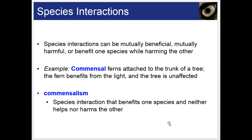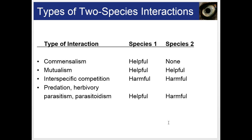There are many types of species interactions. They can be mutually beneficial, mutually harmful, or benefit one while harming the other. One example is commensalism — a species interaction that benefits one species and neither harms nor helps the other, so the other species is neutral. For example, commensal ferns attach to the trunk of a tree: the fern benefits from the light, and the tree is unaffected. A chart helps keep track of these interactions: commensalism is helpful for species one and neutral for species two.